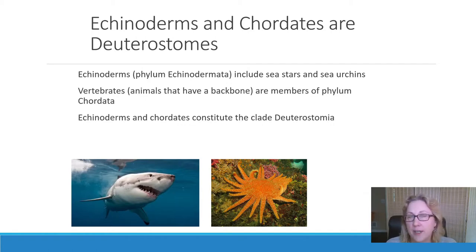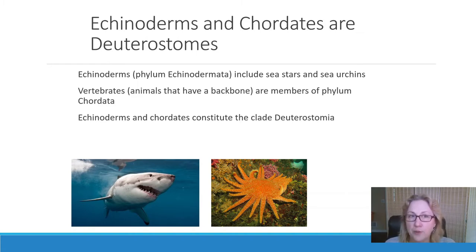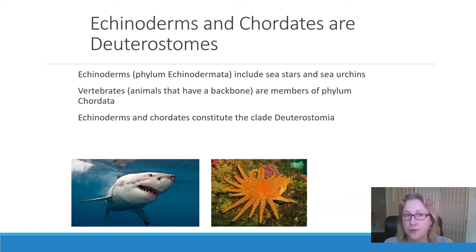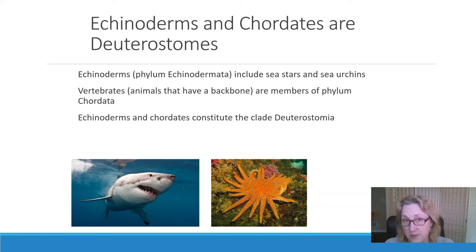The echinoderms and the chordates are deuterostomes, and there are a few other small groups in the deuterostomes as well. Deuterostome is a type of early embryonic development. Most of the rest of the animals are protostomes, or neither deuterostomes nor protostomes. Deutero means second, stoma means mouth. So deuterostomes means during gastrulation, the mouth forms second — which means the blastopore forms the anus in deuterostomes.